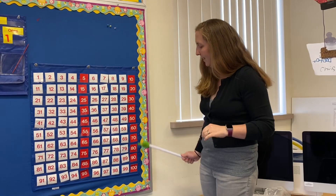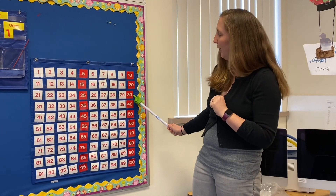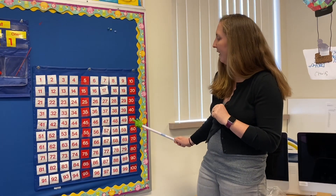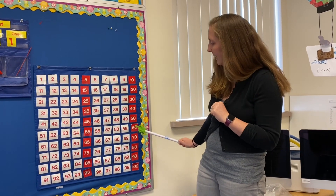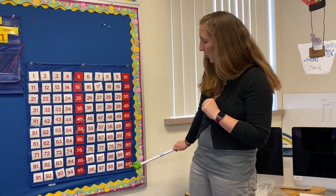Now we're gonna count by tens — we need both hands. Skip count in steps of ten. Count by tens to one hundred. You'll reach one hundred when you count by tens. Ten, twenty, thirty, forty, fifty, sixty, seventy, eighty, ninety, one hundred.